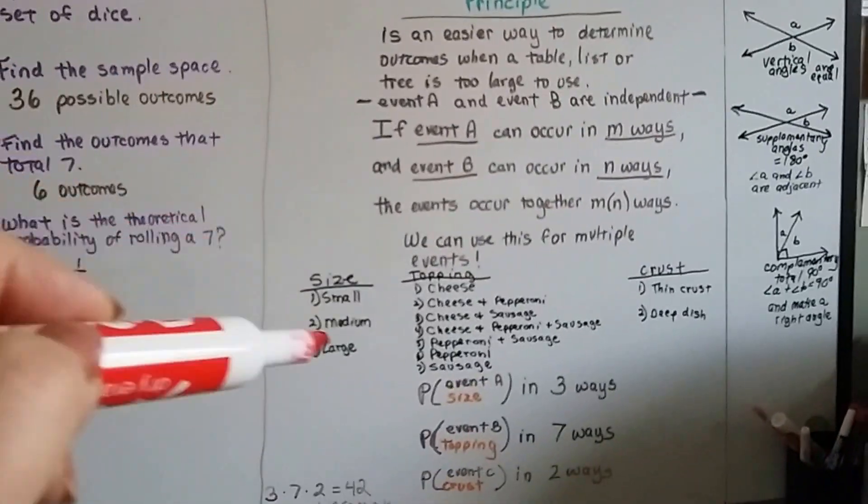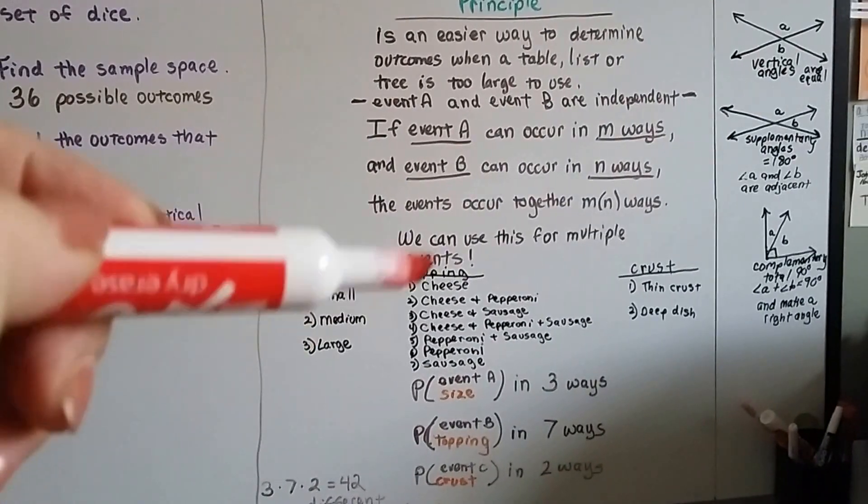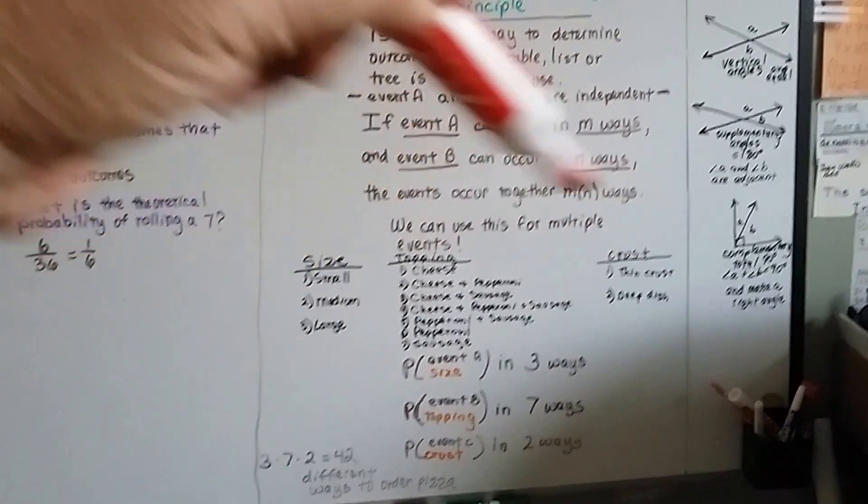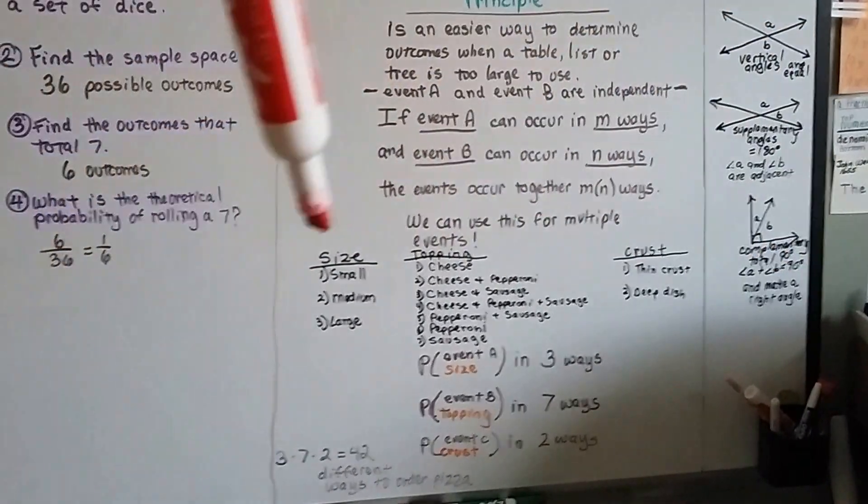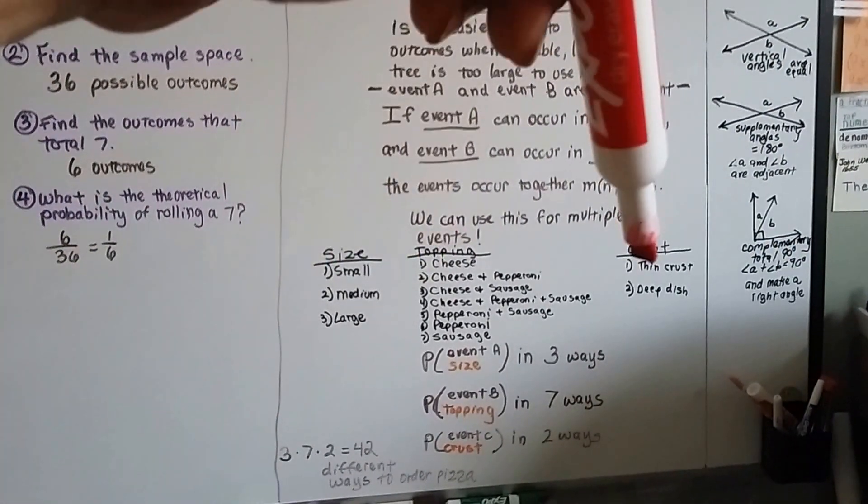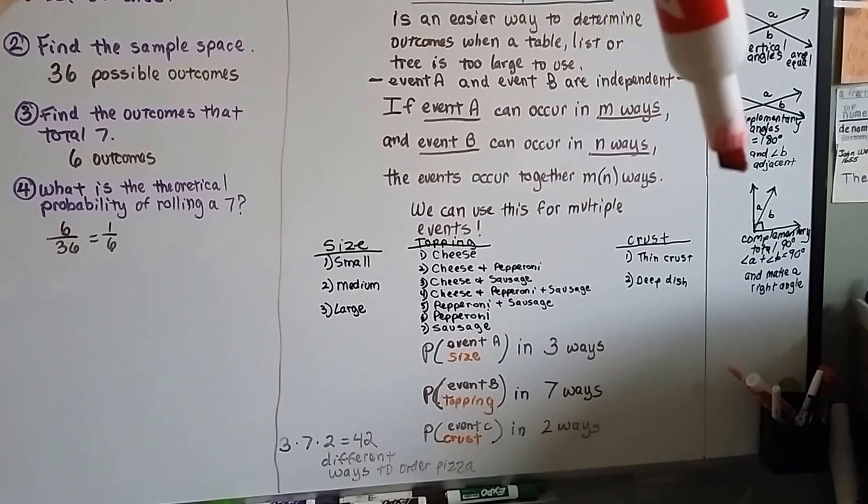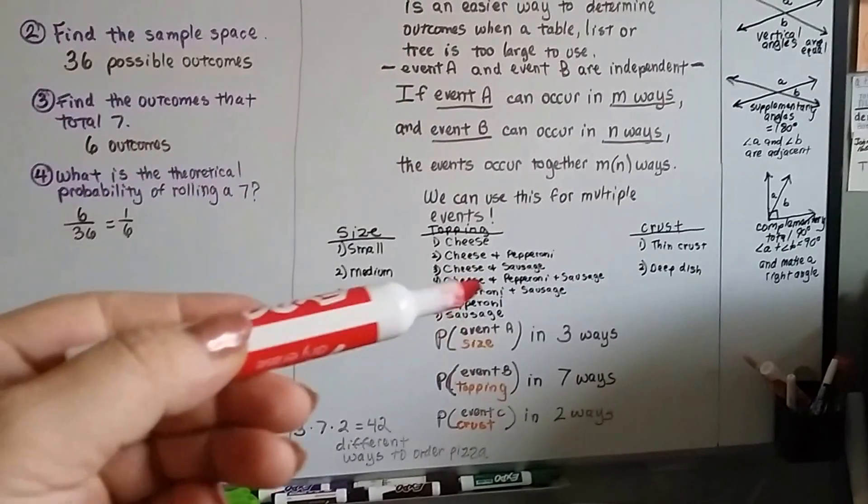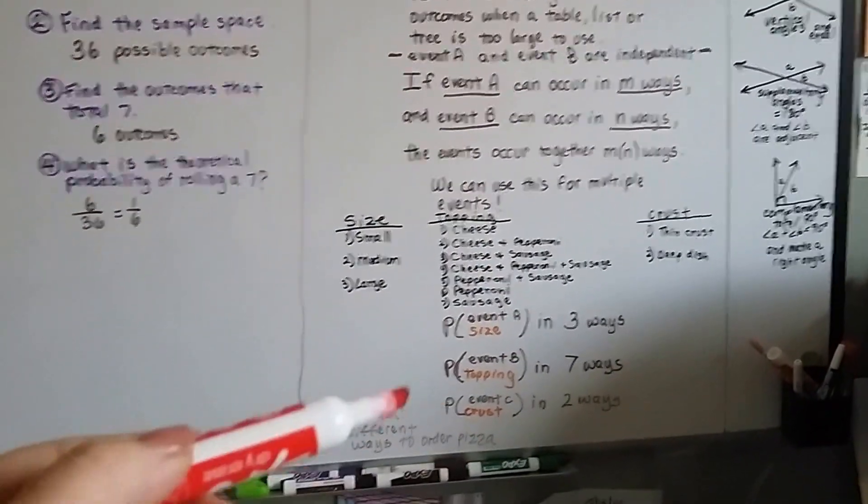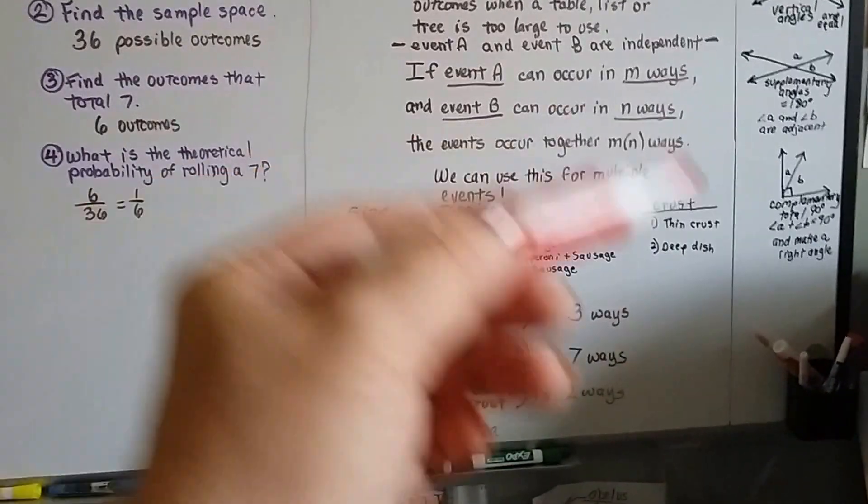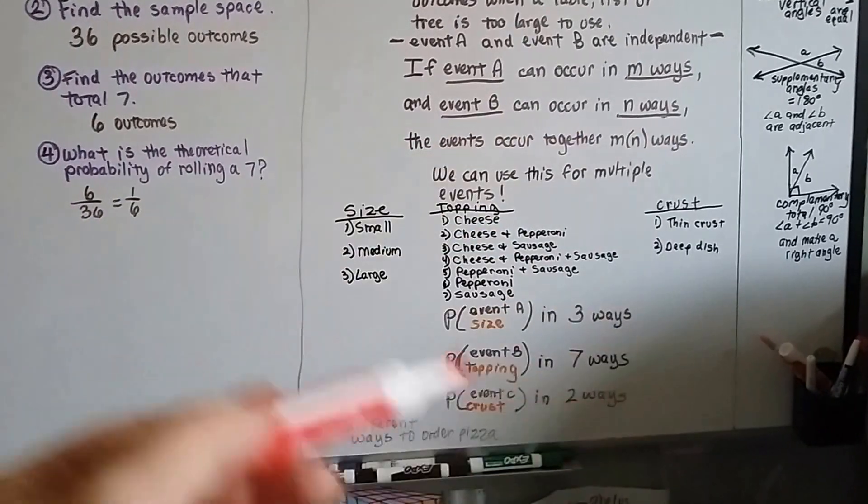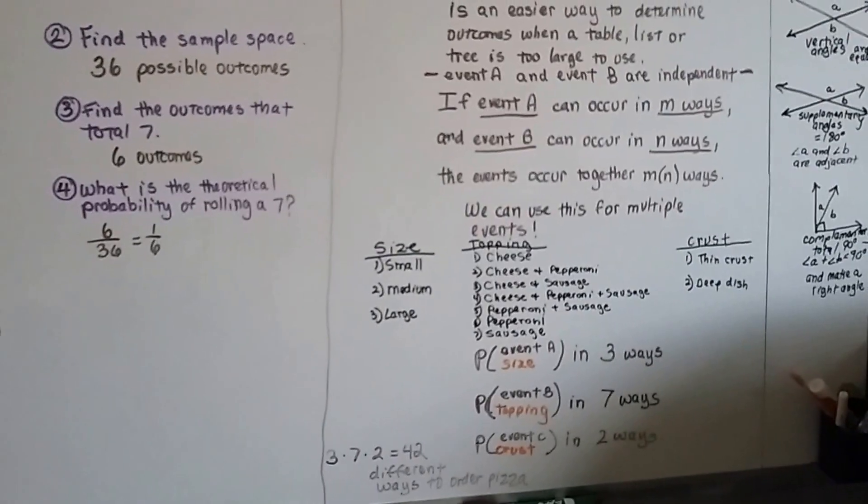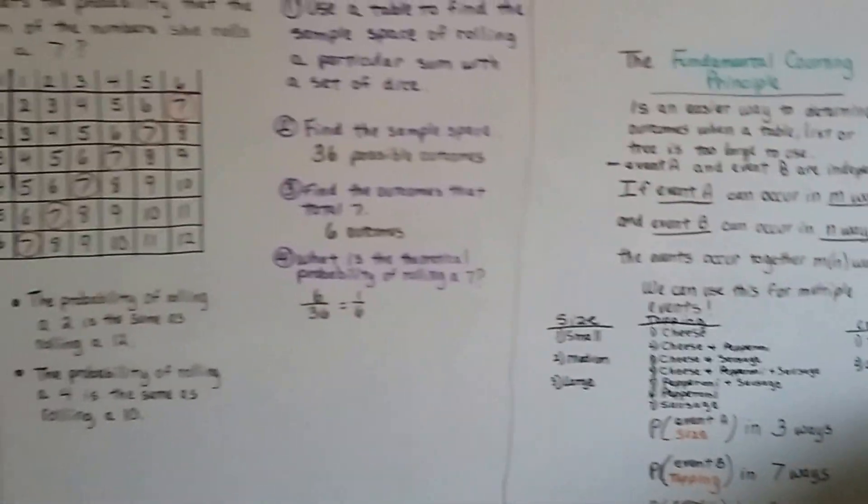That's called the fundamental counting principle. So you just find how many ways the first one can be done, find out how many ways the second one can be done, and you could have five different choices. You could have size, topping, crust. You could have different types of cheese. So each would be an event, and then you just multiply them to each other to find the complete way they can be combined. And in this case, the pizza can be combined into forty-two different ways.